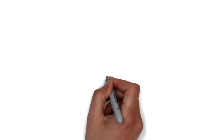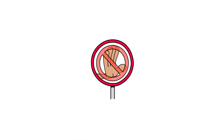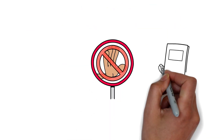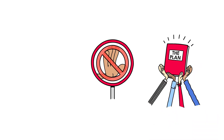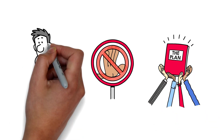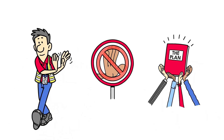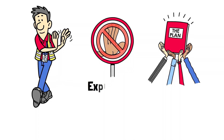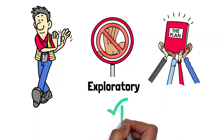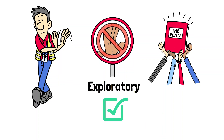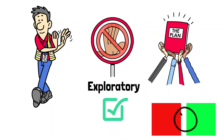Don't peek and stop early. Pre-register your plan to resist bias. Avoid multiple unplanned comparisons — if you must explore, label it as exploratory and validate later. Prevent contamination: users shouldn't see both variants.